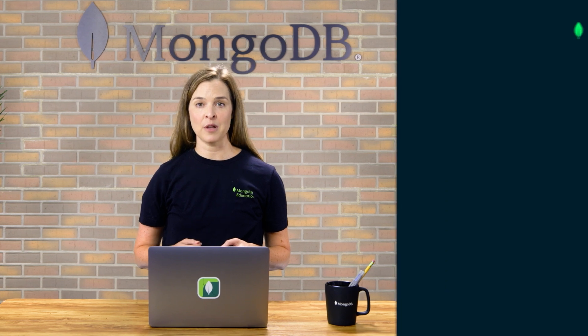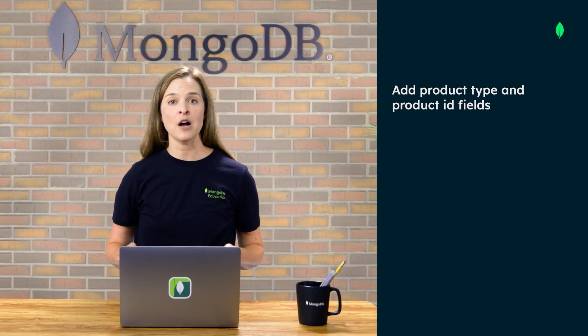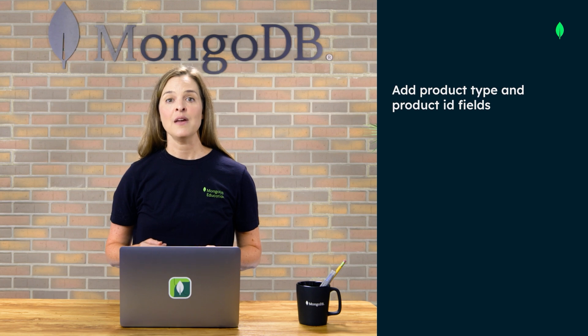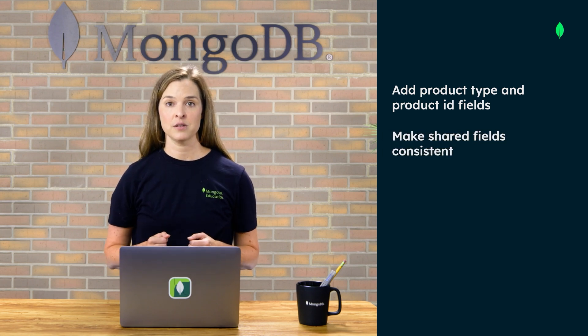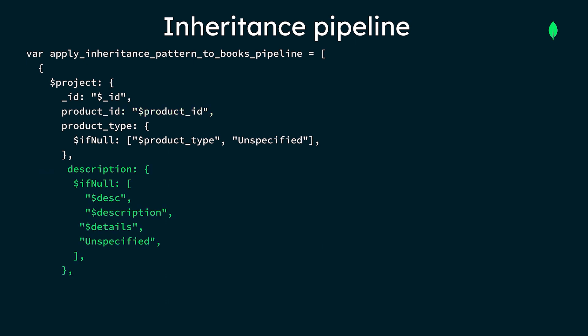We'll use two pipelines to add product type and product ID fields to all documents in the books collection and make some of the shared fields consistent. In our first pipeline, we'll update all book documents with a new product type field and set the value to unspecified, which we'll update in our second pipeline. We'll also add a product ID field for all documents. Next, we'll make some of the shared attributes more consistent by combining the details and desk fields into one field named description.